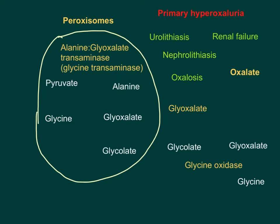Hello everyone, Dr. Mungle here. Today I'm going to explain hyperoxaluria — in particular, primary hyperoxaluria. Hyperoxaluria basically means excess levels of oxalates found in the urine, and this is generally because of consumption of dietary sources rich in oxalates. Generally, green leafy vegetables are rich in oxalates, and also green tea — excess consumption of green tea is known to cause excess oxalate excretion in the urine, giving rise to hyperoxaluria.